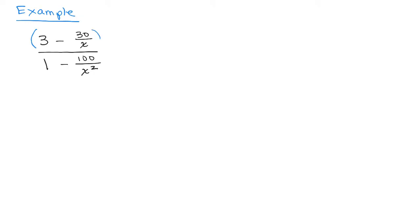You have to have at least an X squared to have the X squared cancel. So I'm going to multiply both the numerator and the denominator by X squared.